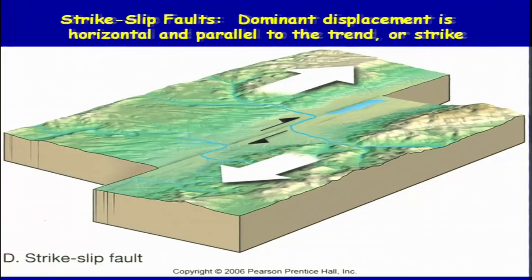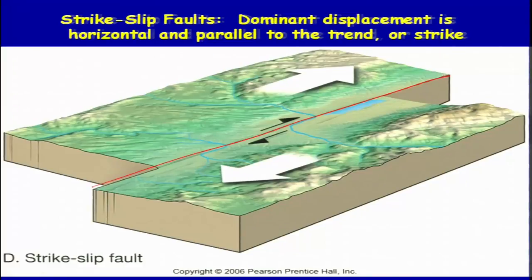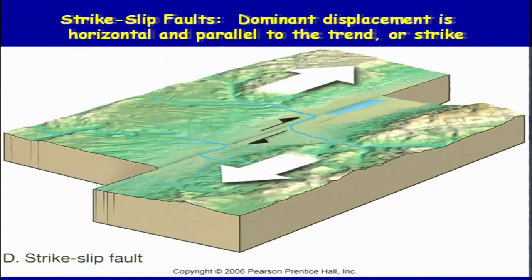This is again a sketch which shows that two blocks have passed each other along a line — this is what we call the fault line on the surface. Since we are talking about photo interpretation or photo geology, we will be looking mostly at the surface. Whatever deformation is taking place subsurface will be reflected on the surface, and the landforms or features which exist on the surface will get modified.